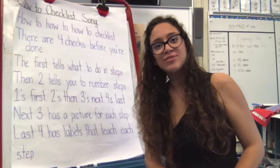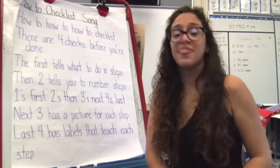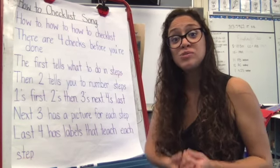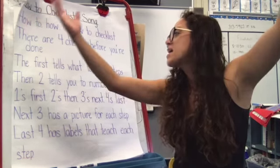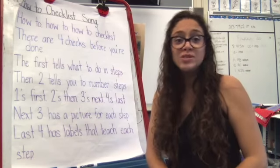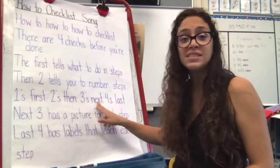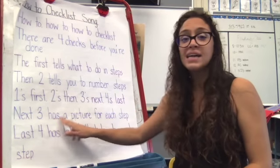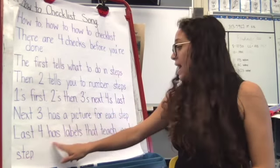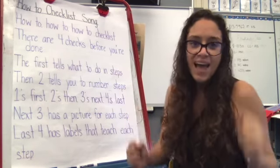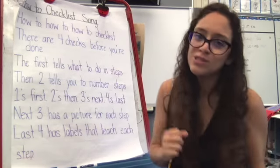How to, how to, how to checklist. There are four checks before you're done. The first tells what to do in steps. Then two tells you to number steps. One's first, two's then, three's next, four's last. Next three has a picture for each step. Last four has labels that teach each step. How to, how to, how to checklist.